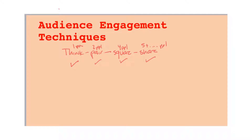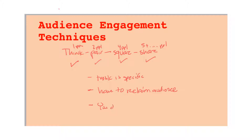Key tips for think-pair-square-share: make sure the task is specific. You also need a way to reclaim the audience because the room can get very loud — maybe use a bell or another clear signal. With share, you don't have to call on everyone. If 12 people want to share but time is limited, call on three or four and say, 'I appreciate all the others who want to share — maybe at the end we'll come back to that.'